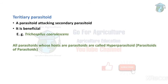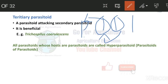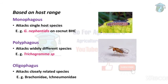To balance this, tertiary parasitoids attack secondary parasitoids — the parasitoid that eats the parasitoid that eats the pest. So the tertiary punishes the secondary for eating the primary, maintaining balance. Tertiary parasitoids are beneficial. Examples: Trichospilus coerulescens. These are also called hyperparasitoids because they kill parasitoids whose hosts are themselves parasitoids.